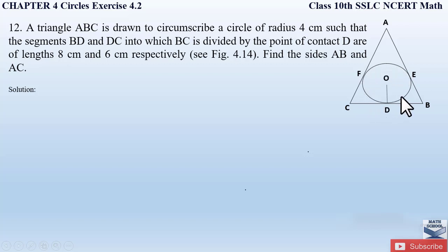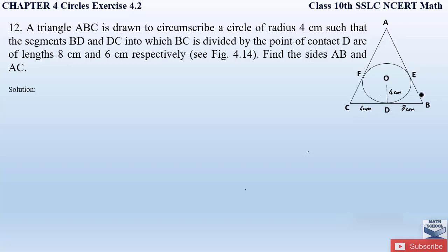They have given us a figure where triangle ABC circumscribes a circle of radius 4 cm. So OD is the radius, given as 4 cm. This radius meets the side BC at point D, the point of contact between the triangle and the circle, dividing BC into two parts: BD = 8 cm and DC = 6 cm. We have to find the length of sides AB and AC.